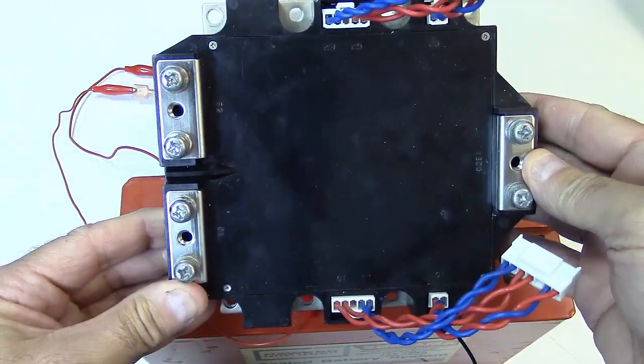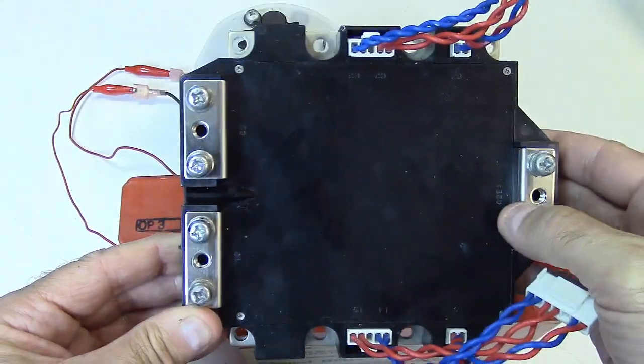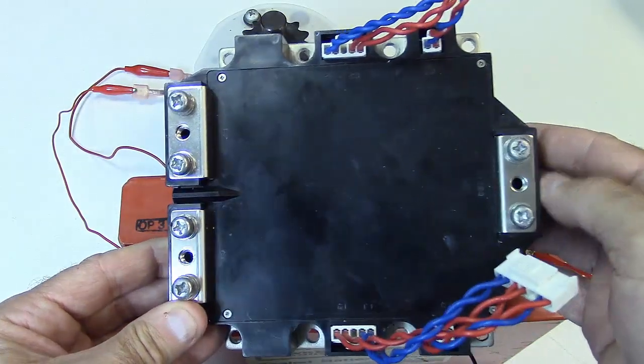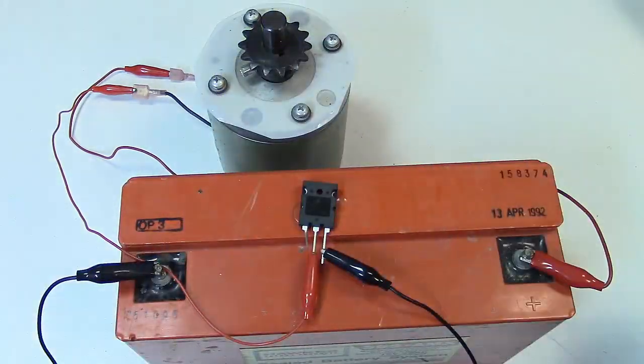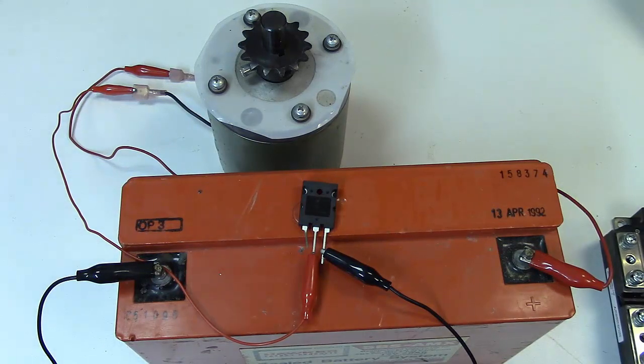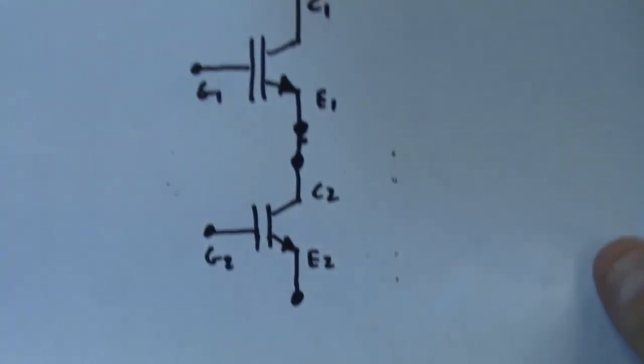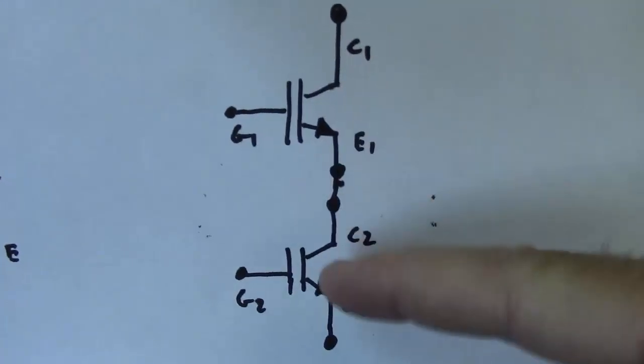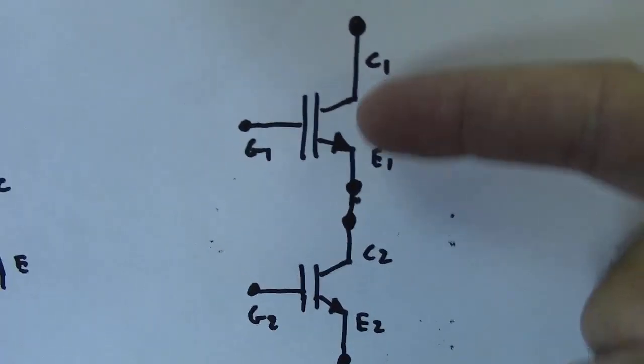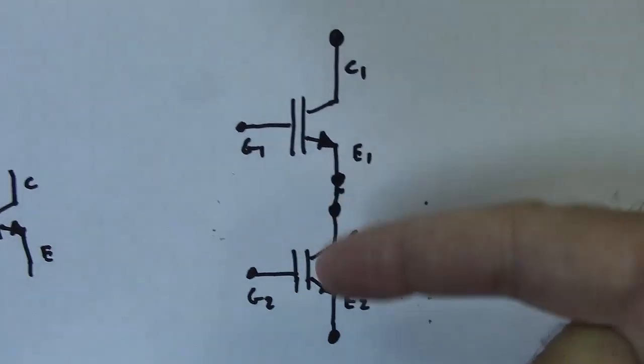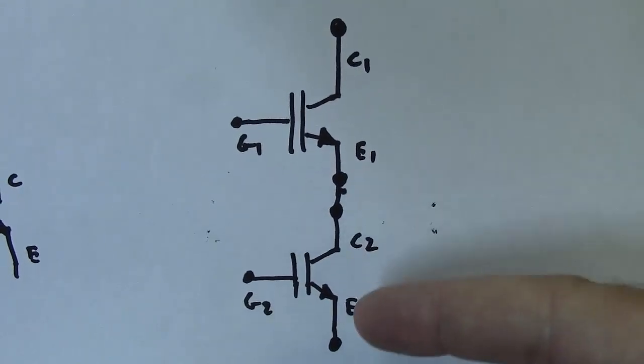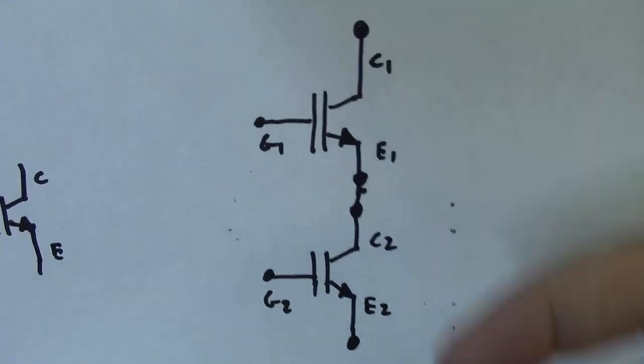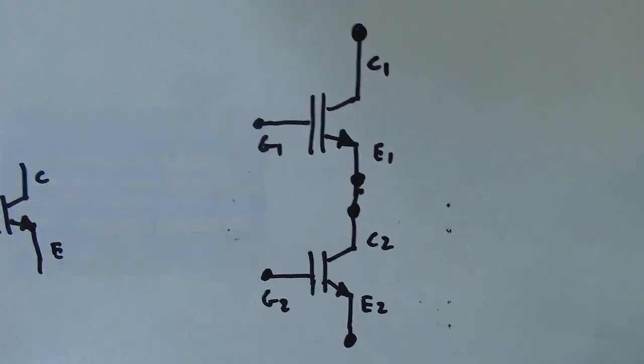So this is actually two IGBTs in one package. And the schematic for this device looks like this. It actually has two devices that are in sort of a totem pole arrangement. So the collector of one device is connected to the emitter of the other device. And this is what we call a half bridge.